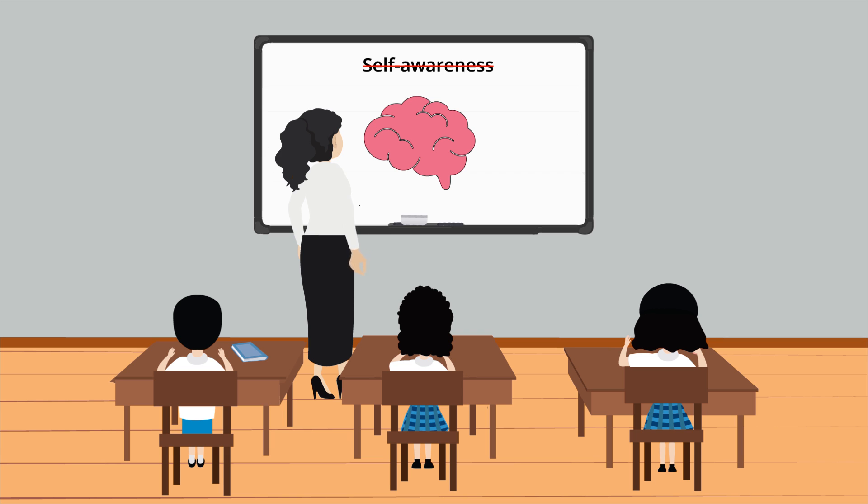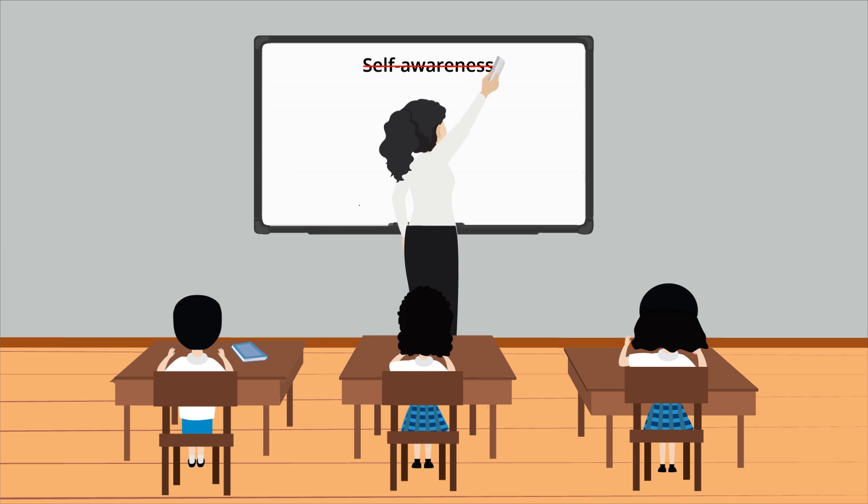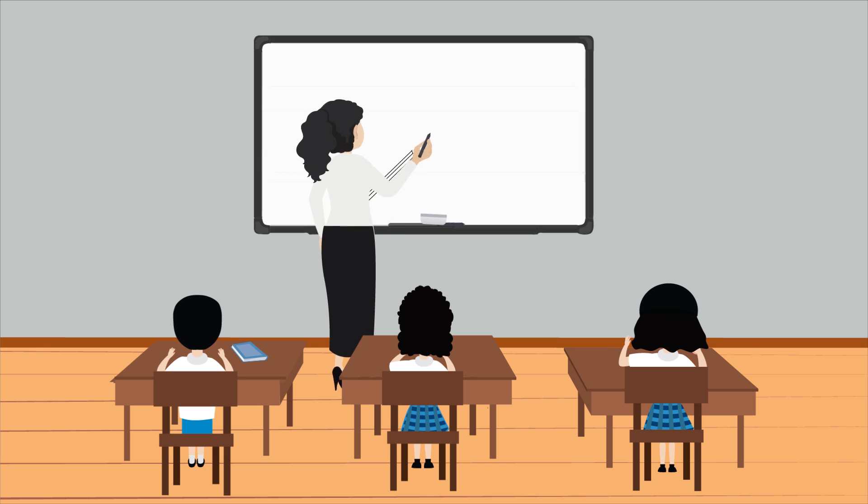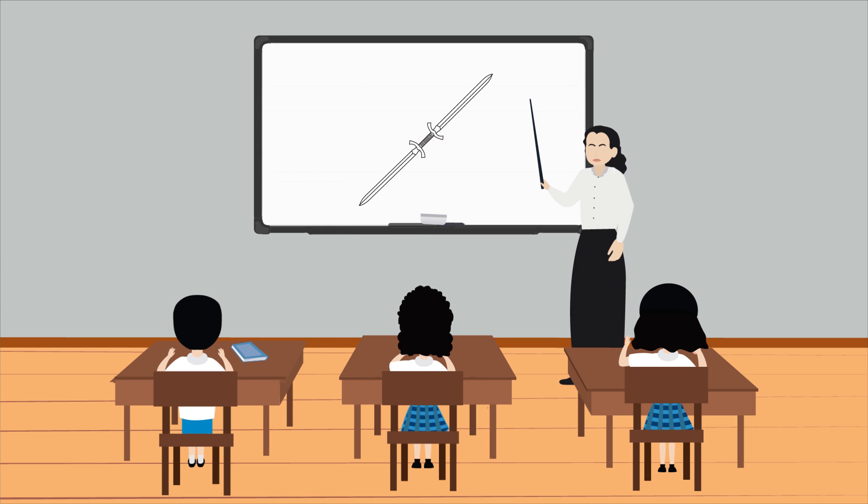When studying the Dunning-Kruger Effect, it is helpful to think about it as a double curse of incompetence. People that lack knowledge in a certain area arrive at incorrect conclusions and are not smart enough to see their mistakes and correct them. Our brains want to believe we're super knowledgeable and superior to those around us, but oftentimes we may not be.